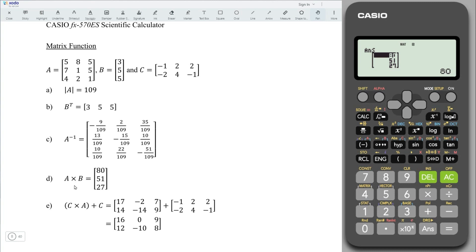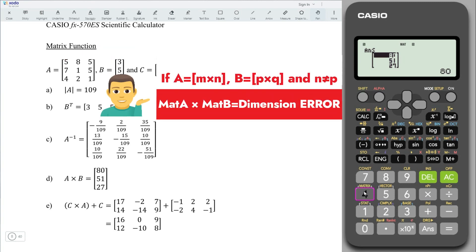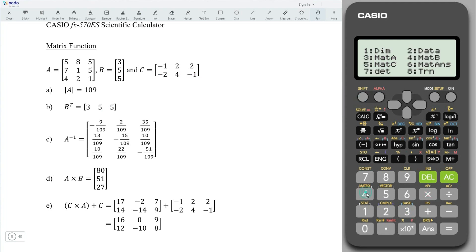Note that, to ensure multiplication is possible, the number of columns of the first matrix must be exactly the same as the number of rows of the second matrix. Otherwise, we would obtain dimension error. For example, matrix A multiply matrix C. When we press on equal, obtain dimension error.